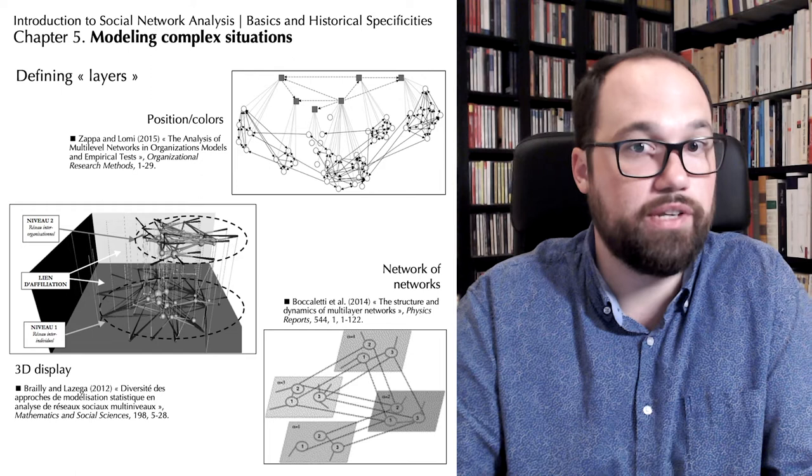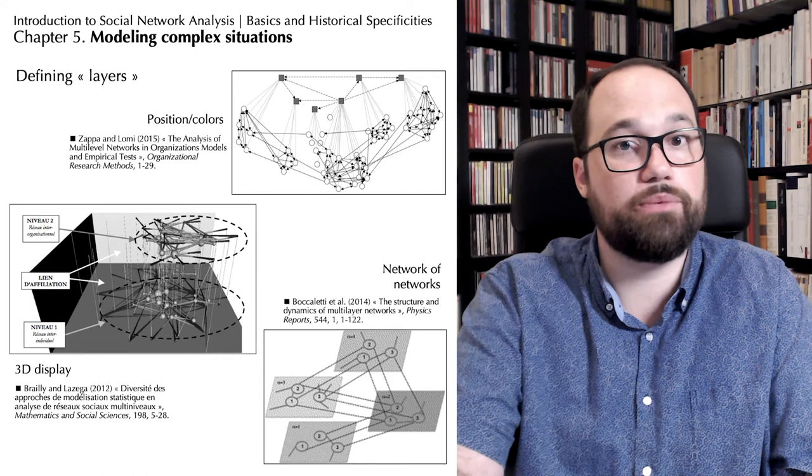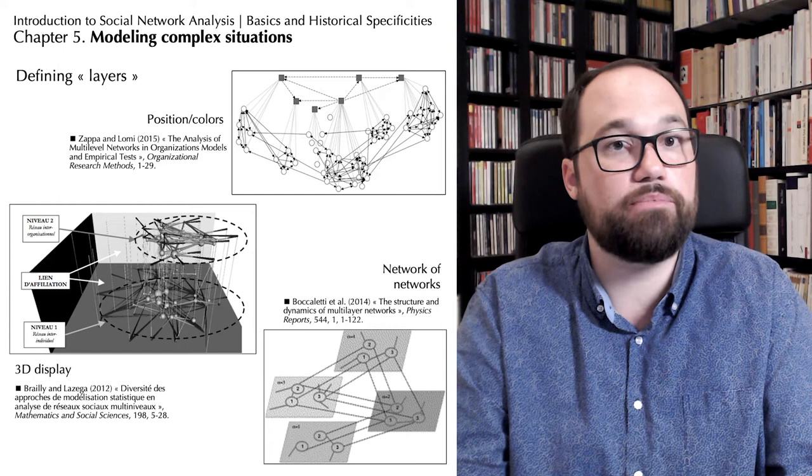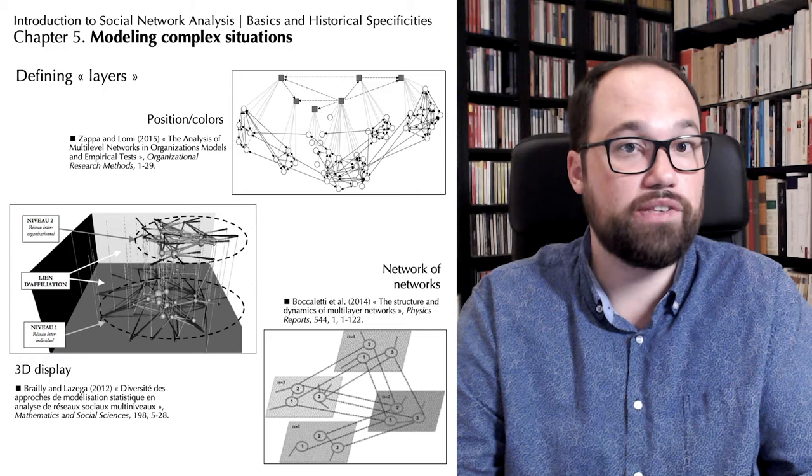We have seen that affiliated networks, two-mode networks, already contain a form of verticality. But when we are interested in historical objects, there are rarely only two types of vertices and relations. The problem we have when dealing with issues involving verticality is that we are technically and conceptually limited by the fact that we generally express ourselves in two dimensions, and are unable to think in more than three dimensions.